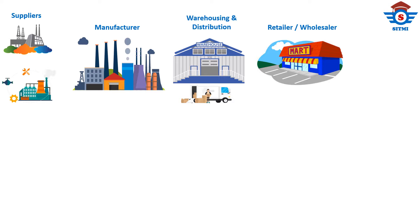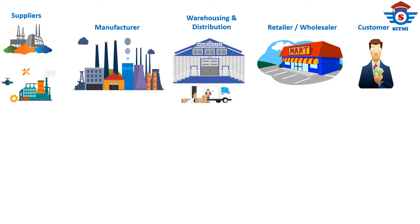Next partner in the chain is the retailer or wholesaler. Usually retailers are business partners that sell goods to the public or end customer in relatively small quantities for use or consumption rather than for resale. And the main component of the supply chain is the shopper or end customer who needs the finished good that is manufactured by the manufacturer.